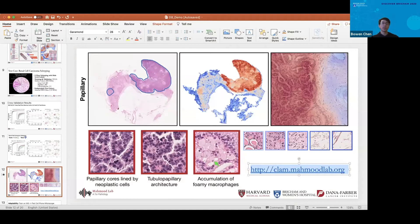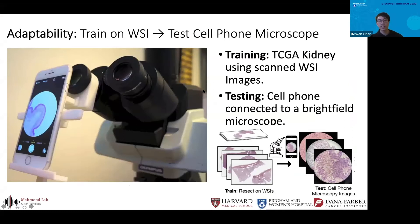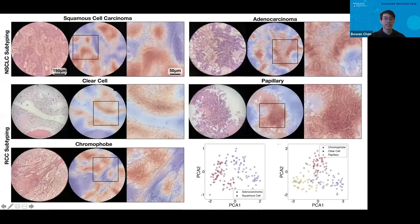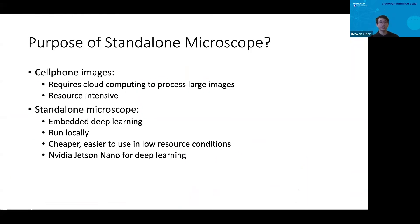We also found that even training the model on whole slide images and testing them on images acquired from a microscope using a smartphone, we didn't suffer a big loss in accuracy. The left region shows the cell phone image and the right shows the heat maps generated by the model. This led us to think about designing a standalone microscope that would acquire images and feed them into our model to achieve real-time point-of-care diagnosis.